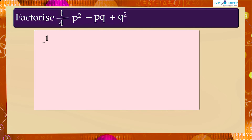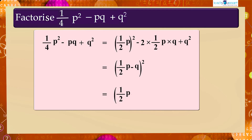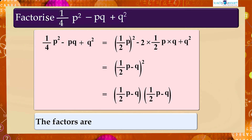So the expression equals (1/2 p) whole square minus 2 × (1/2 p) × q plus q squared, which equals (1/2 p minus q) whole square, which equals (1/2 p minus q)(1/2 p minus q). Therefore, the factors are (1/2 p minus q) and (1/2 p minus q).